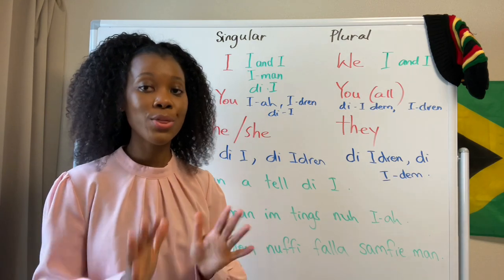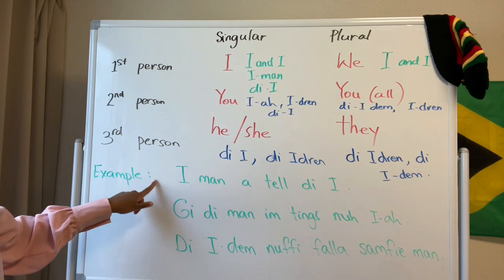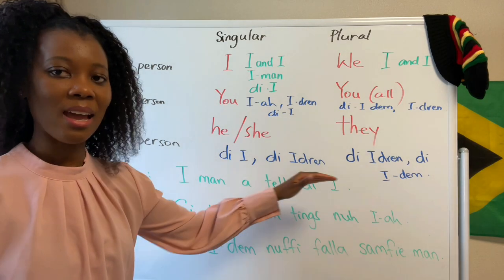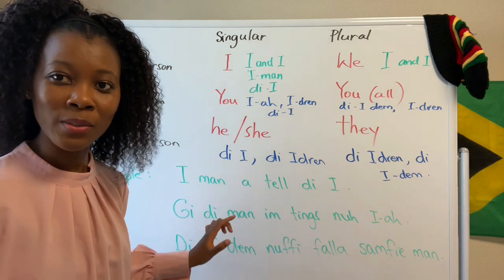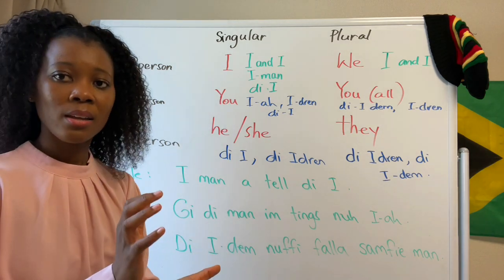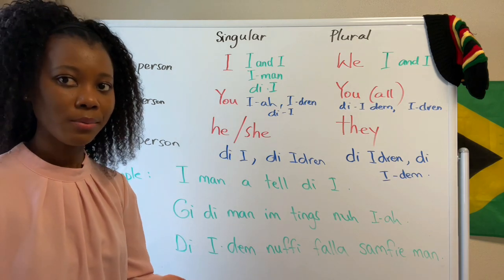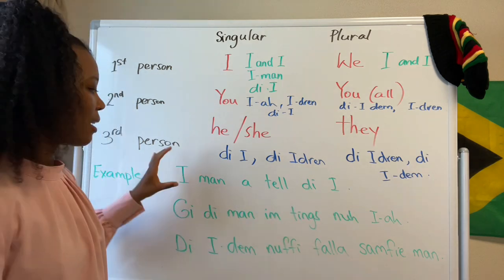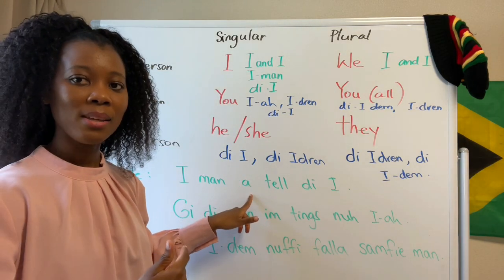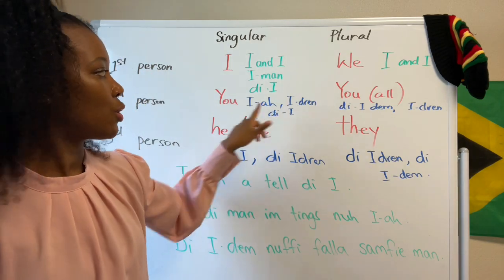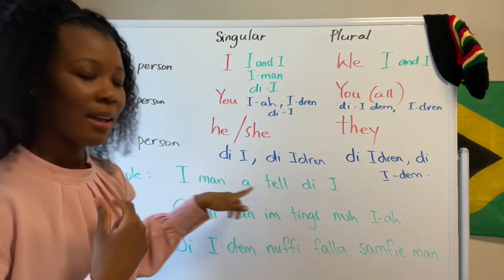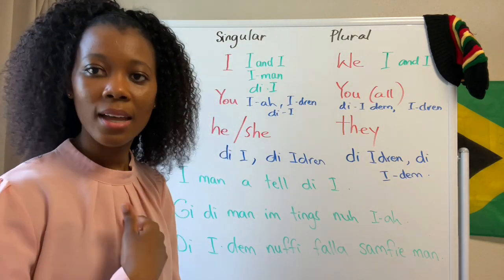Let's get into some example sentences. The first example: 'Iman a tell DI.' In this lesson I'm not using Cassidy JLU — I'm just using common spelling for Jamaican Patois, since Iyaric uses a lot of Jamaican Patois. 'Iman a tell DI' — 'Iman' here is 'I,' 'a tell' means 'I'm telling,' and 'DI' here means 'you.' So 'Iman a tell DI' means 'I am telling you.'